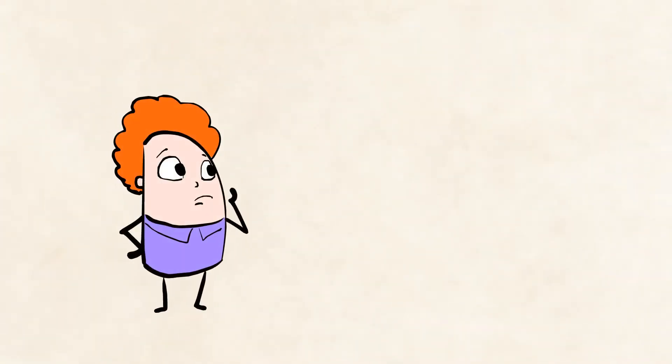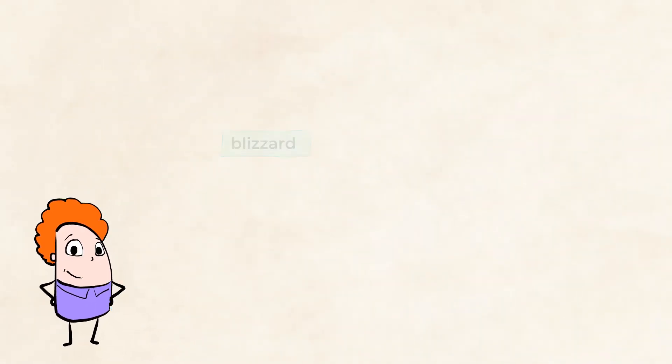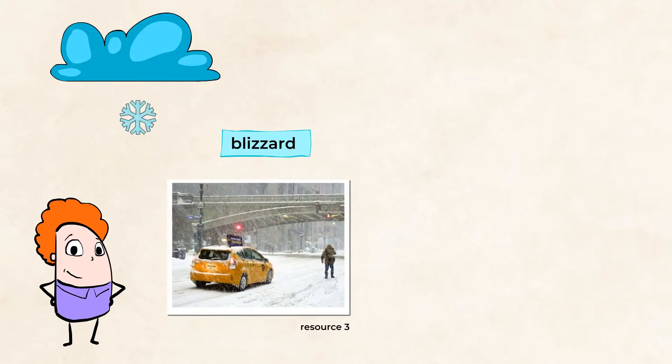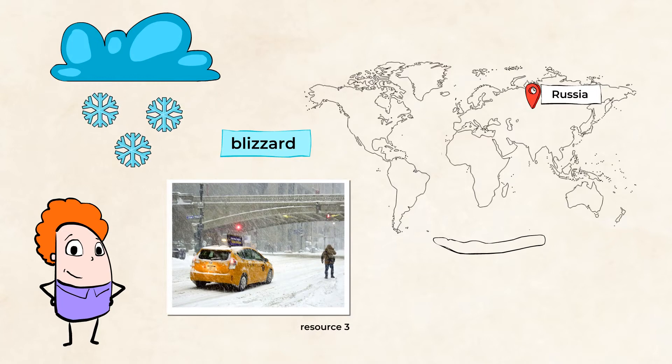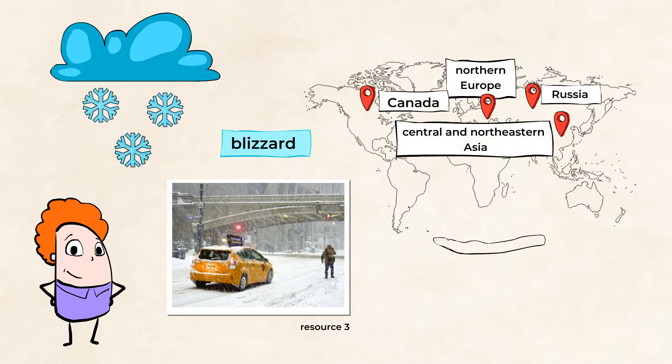Another example of extreme weather would be a blizzard. And no, I don't mean the kind of blizzard you eat. I mean the one that's a supercharged snowstorm. Blizzards are most common in places like Russia, Central and Northeastern Asia, Northern Europe, Canada, and Alaska.